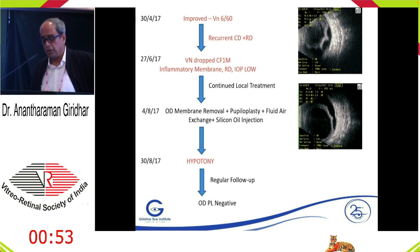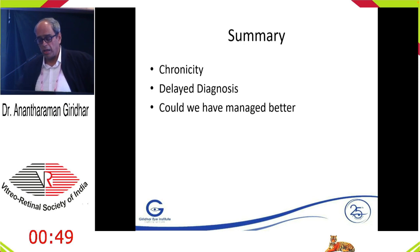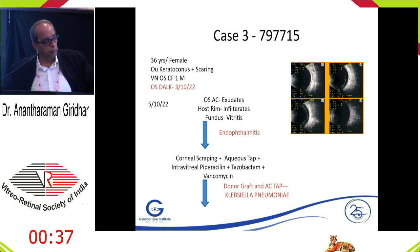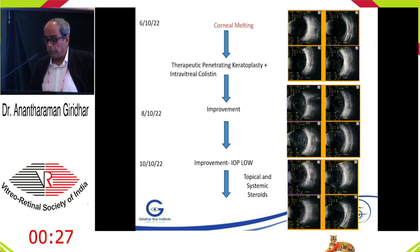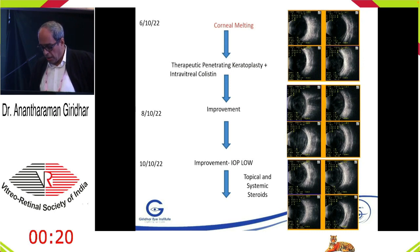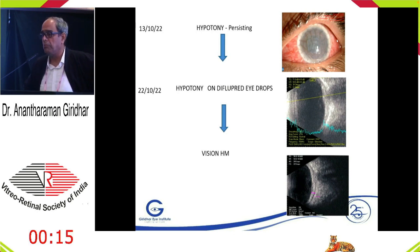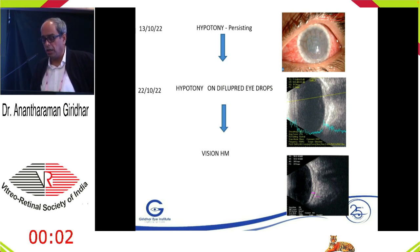A final vitrectomy with silicone oil injection was performed, but unfortunately the outcome was poor. The question remains: should silicone oil have been injected in the initial sitting, or was the chronicity of disease responsible for the bad outcome? Case three: post-corneal ulcer endophthalmitis. The cornea showed pneumonia-like findings. The patient was managed with therapeutic penetrating keratoplasty and intravitreal colistin based on culture reports, and improved significantly. However, the resulting problem is significant hypotony with no evidence of retinal or choroidal detachment. Intravitreal triamcinolone has been offered but the patient has not yet had treatment.